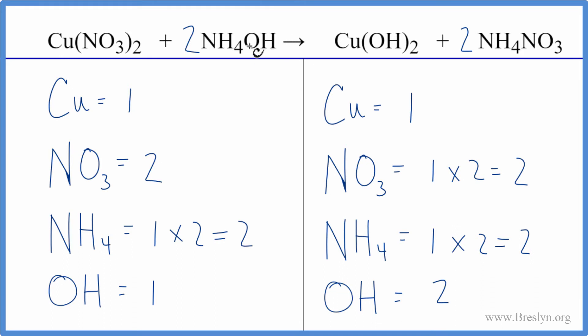So you can see, by counting these polyatomic ions as one thing if they stay together in the chemical reaction, that makes the balancing just a whole lot easier.